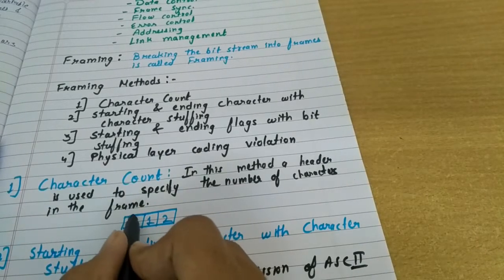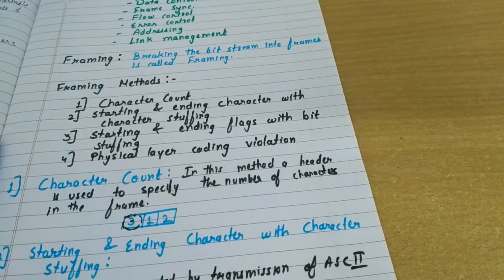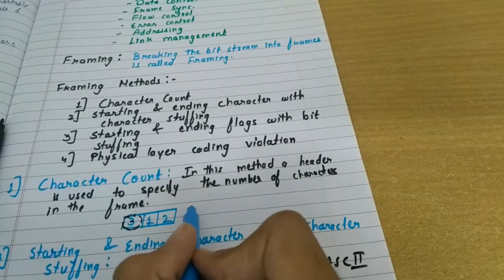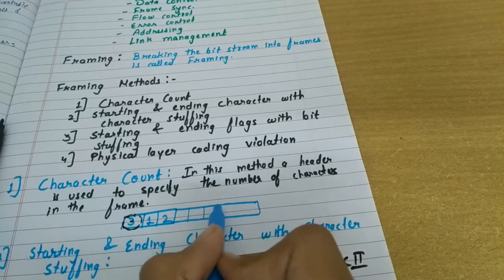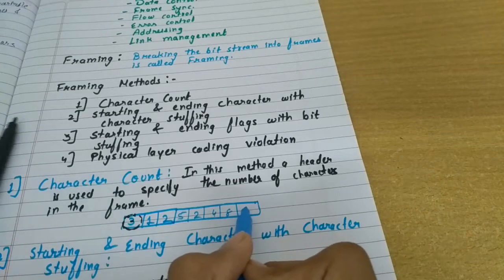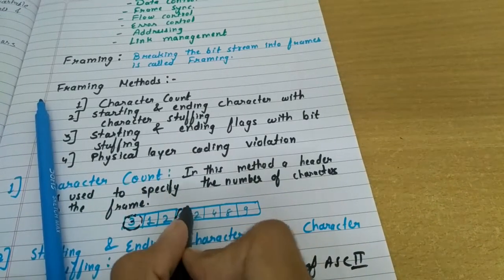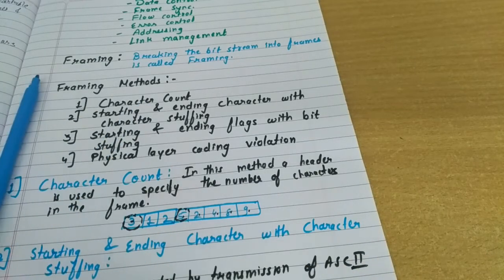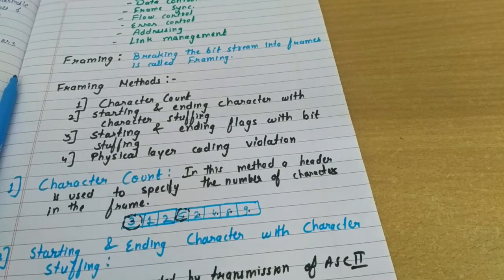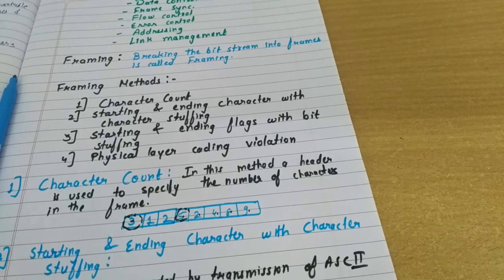Similarly, if the next frame has five characters, the header will contain five, indicating five characters in that frame. The obvious drawback of character count is that if an error occurs, the character count value will change, leading to a loss of synchronization and loss of data.